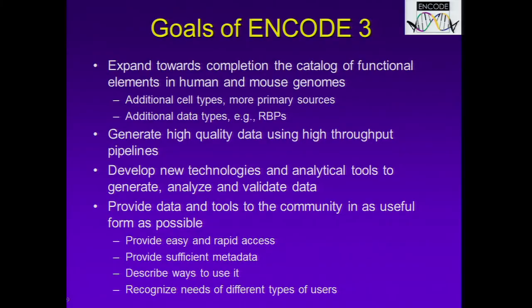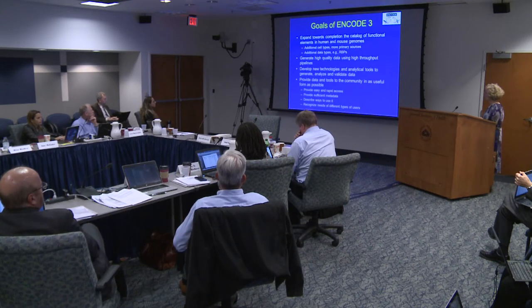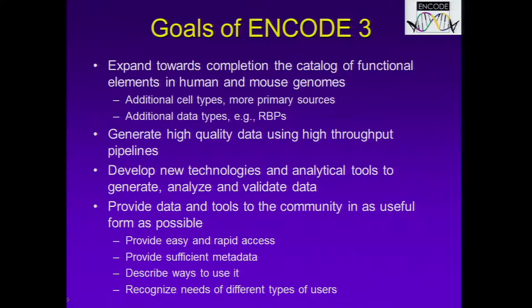I want to expand a little bit on the goals of ENCODE 3, the current phase. We wanted to expand toward completion of the catalog of functional elements in the human and mouse genomes. We added additional cell types, including more primary sources, and additional data types such as RNA binding proteins, which had not been included in ENCODE 2. We're continuing to generate high-quality data using high-throughput pipelines, developing new technologies and analytical tools, and providing the data and tools to the community in as useful a form as possible, with easy and rapid access and sufficient metadata so people understand how the experiments were performed.